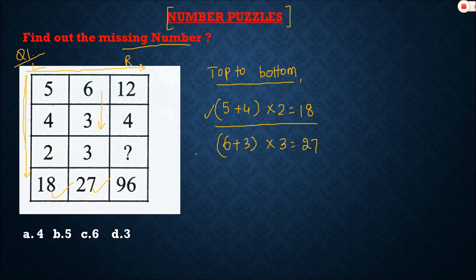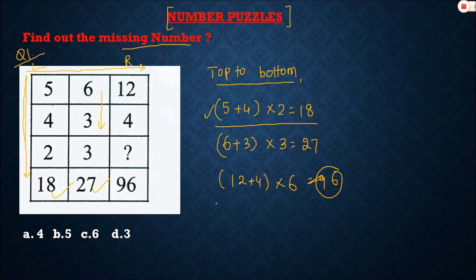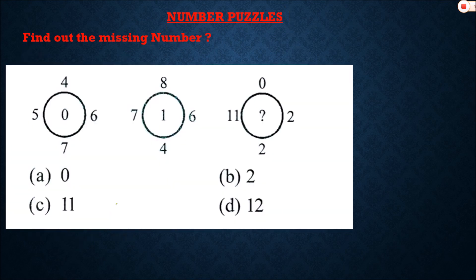Now, 12 plus 4 equals 16. What must we multiply to get 96? 16 multiplied by 6 equals 96. So option C is the correct answer for question number one. Moving on to question number two.